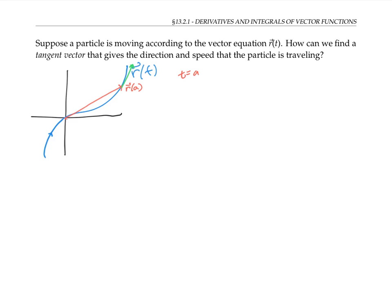To find that tangent vector, I can use the same techniques that we used in calculus one. That is, I can look at a nearby point, r of a plus h for some small number h. Here's the vector r of a plus h. And now I can look at the secant vector that goes in between r of a and r of a plus h.